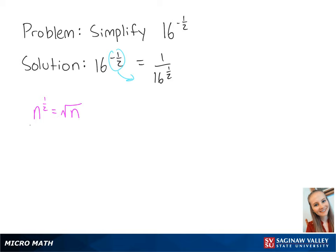A number n raised to the half power is equal to the square root of that number. This gives us 1 over the square root of 16, which is equal to 1 over 4. This is the final answer.